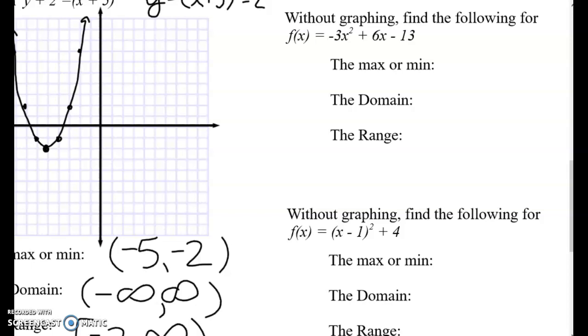So here are the last two examples of 3.1. This says, without graphing, find the following for f of x equals negative 3x squared plus 6x minus 13. So think right away, it's in standard form.